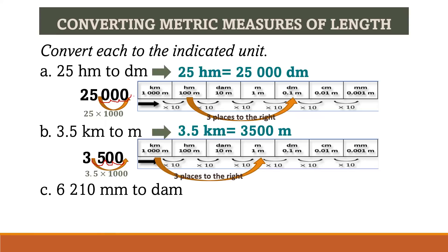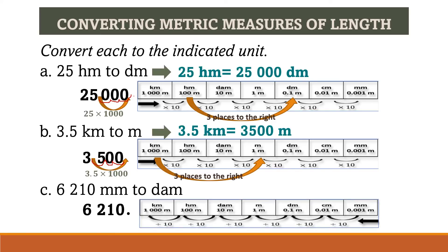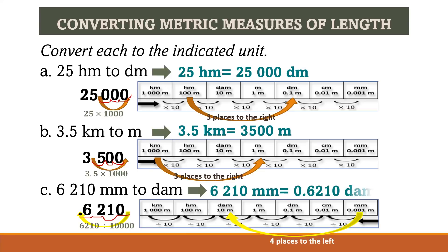For example C, we convert 6,210 millimeters to decameters. We write our given, 6,210, with its decimal point at the end since it is a whole number. We locate millimeter and decameter in the diagram — this time we are moving to the left, so the decimal point also moves to the left. Counting the places: 1, 2, 3, 4 — four places to the left. Our answer is 0.6210 decameters.